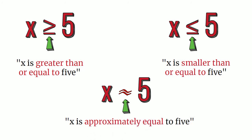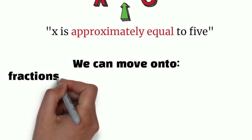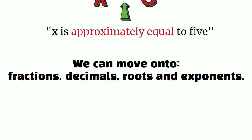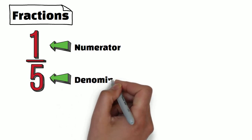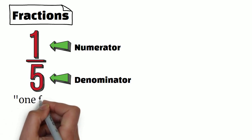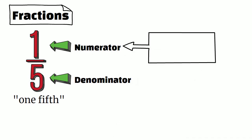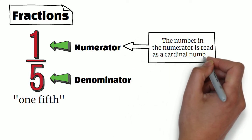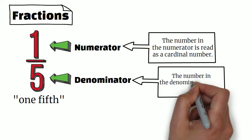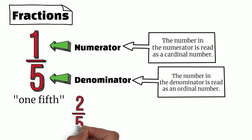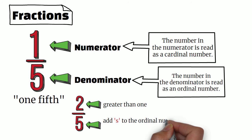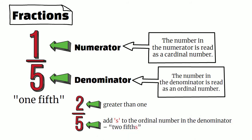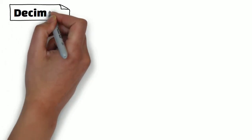Now we can move on to fractions, decimals, roots, and exponents. First, fractions. The number at the top is the numerator and the number at the bottom is the denominator. We read this fraction as '1 fifth.' The numerator is read as a cardinal number and the denominator is read as an ordinal number. If the numerator is greater than 1, we add 's' to the ordinal number — for example, '2 fifths.'